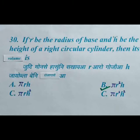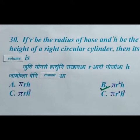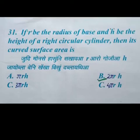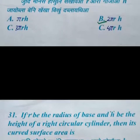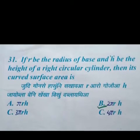If R is the radius of the base and H is the height of a right circular cylinder, then its volume — we have four options and the right answer is option B: pi r square h. If R is the radius of the base and H is the height of a right circular cylinder, then its curved surface area — we have four options and